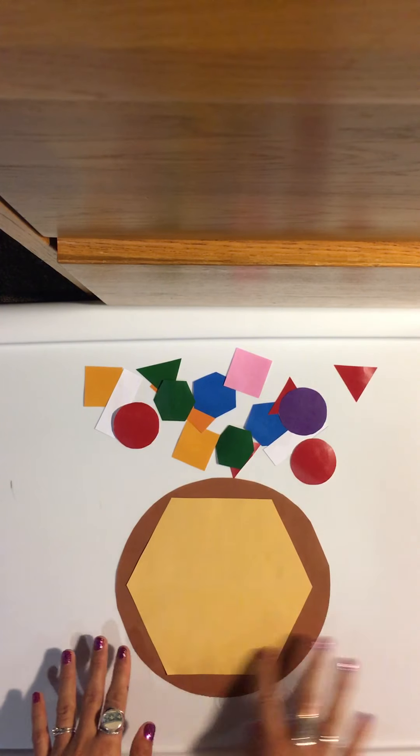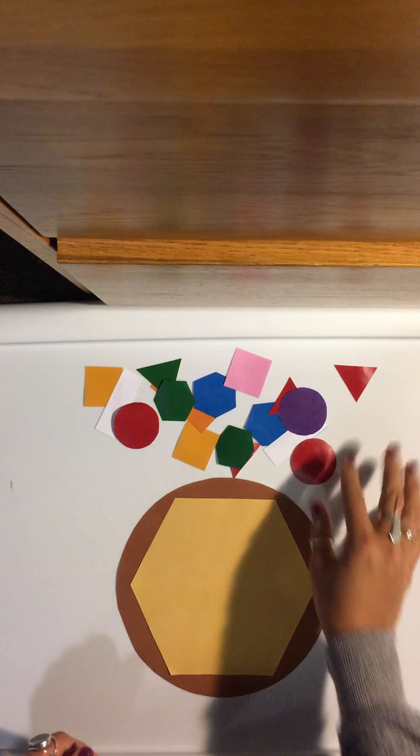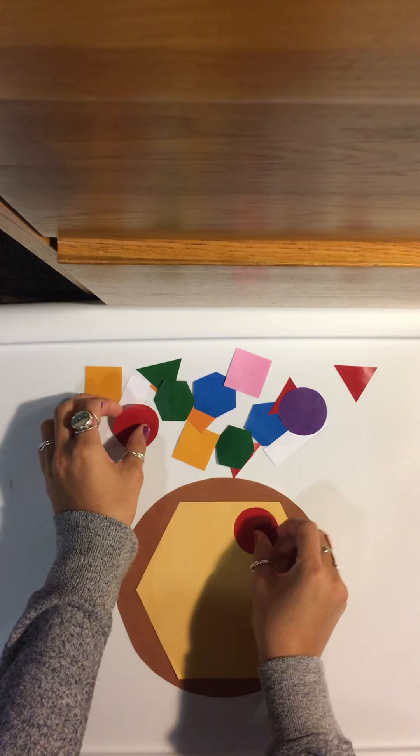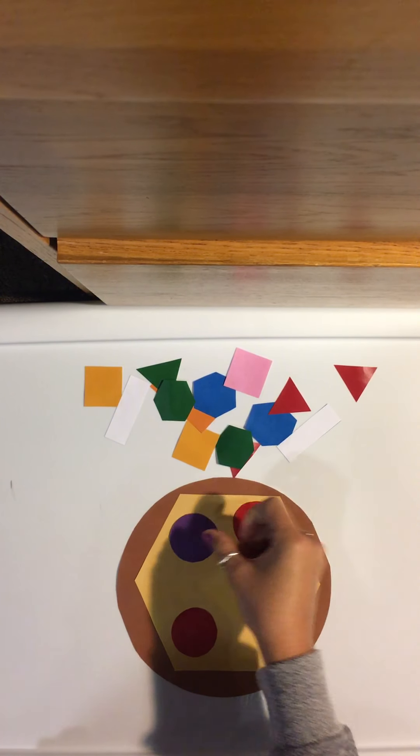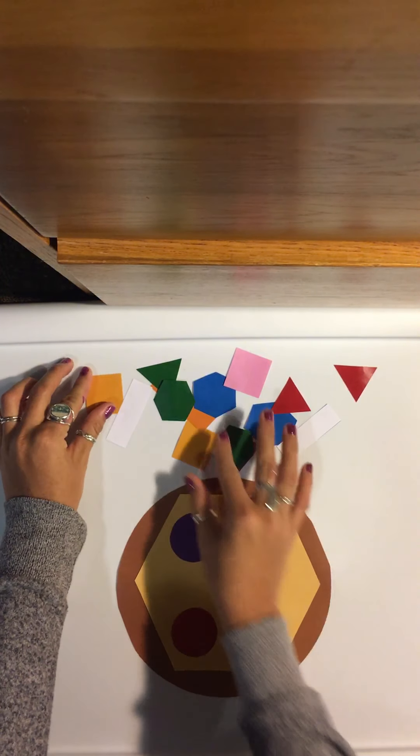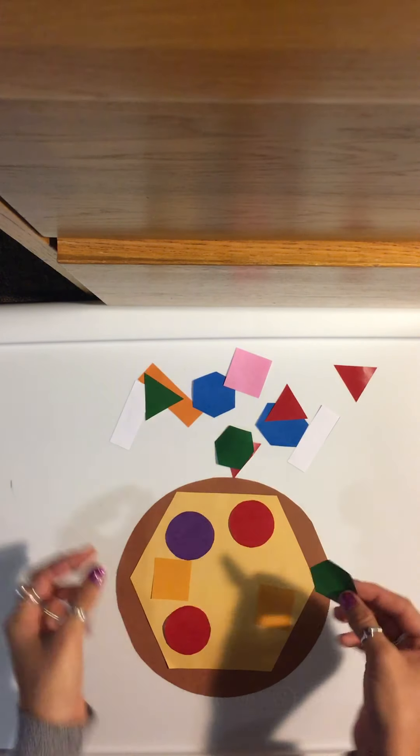So right now we have a circle and a hexagon, and we're going to go ahead and create our pizza. I'm just going to put some circles, I think. These kind of look like pepperonis, huh? We have a little purple one. Maybe some of these yellow squares. Why not? That could be some more cheese.